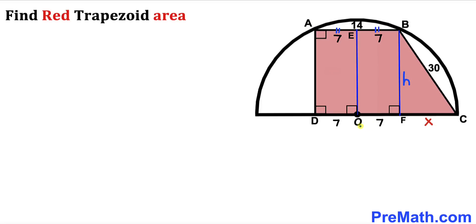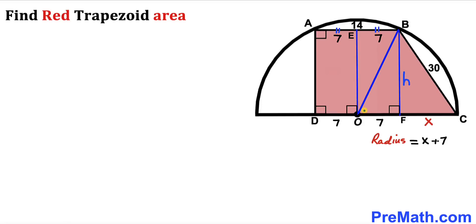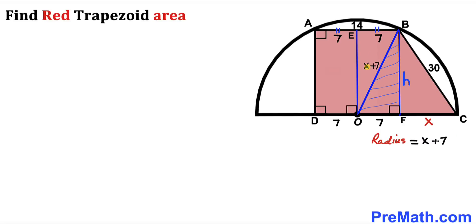The radius of the semicircle is OC, and OC is simply X plus 7. In the next step I have connected center O with point B, giving us right triangle OFB. Since OB is also a radius of the semicircle, its length is X plus 7.